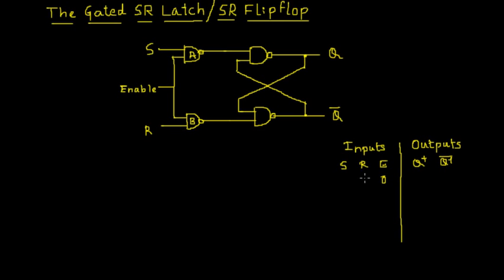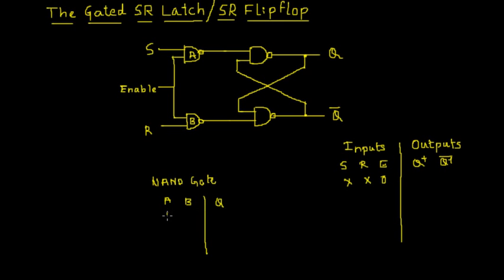Before considering the actual operation of the gated SR latch, we must know how a simple NAND gate behaves. Let me revise that concept. Let A and B be the two inputs of a NAND gate and Q be the output. According to the truth table of a NAND gate, the output is low when both inputs are high, and the output is high when either of the inputs is low.